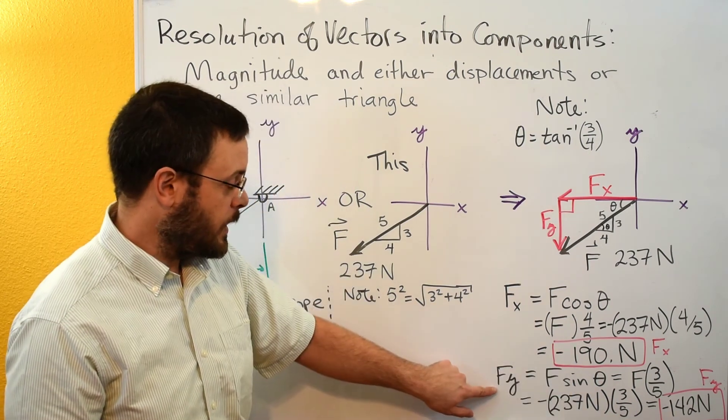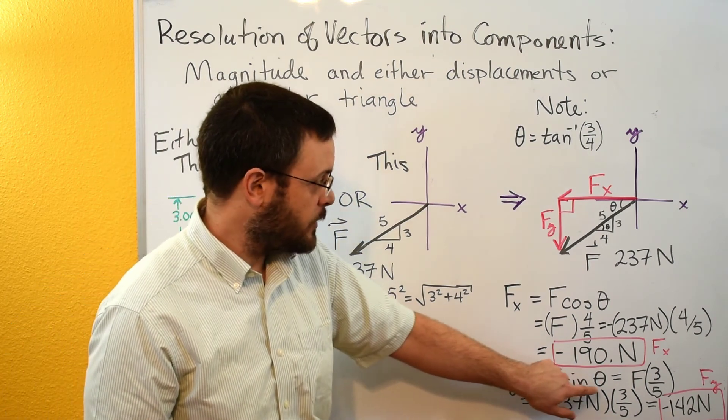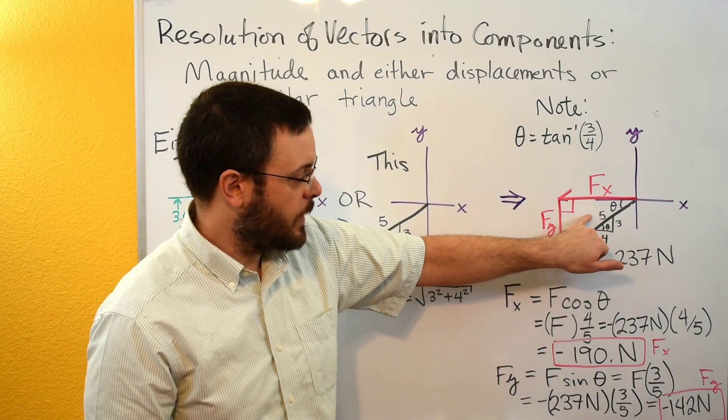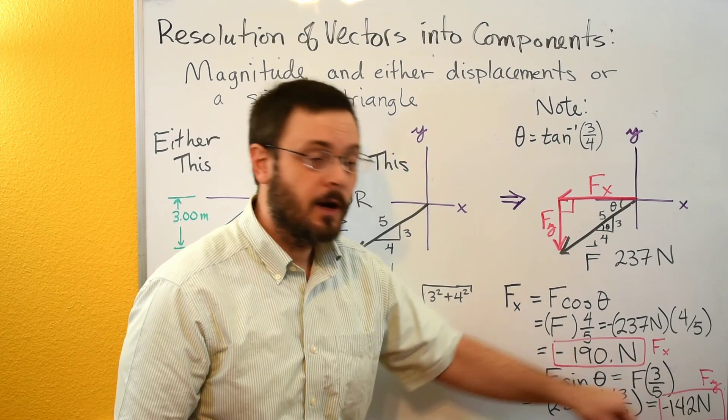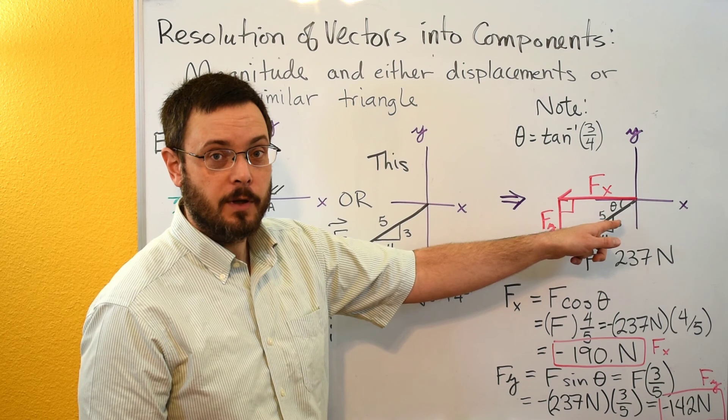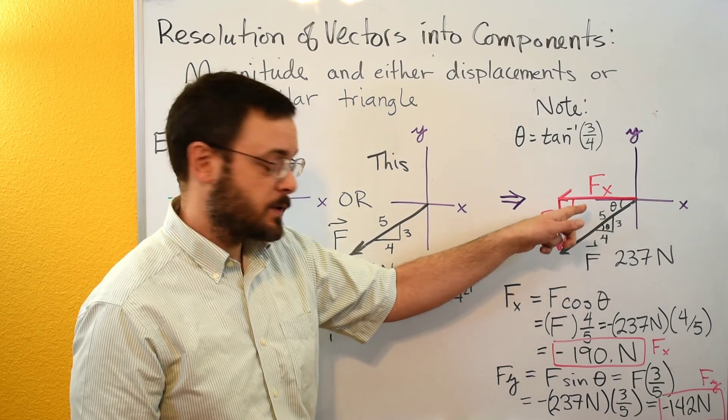Now we'll do the same thing for fy. fy would be f sine of theta. Sine of theta would be the opposite over the hypotenuse, would be the 3 fifths. Or looking at it the other way, it would be the side that's parallel to y, which would be 3 divided by the hypotenuse, which is 5.